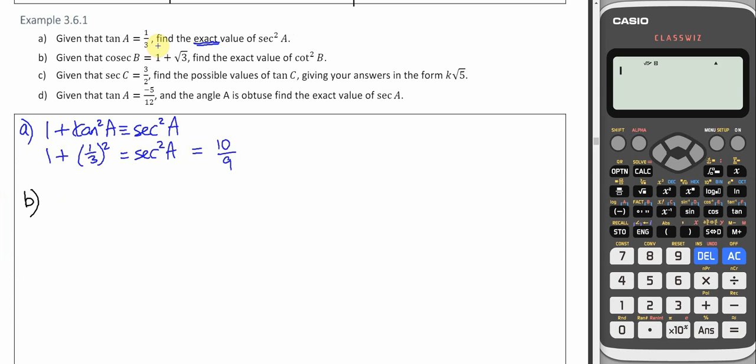Part B. Given that cosec B is 1 plus root 3, find the exact value of cot squared B. Once again, it's best if we don't try and find B.